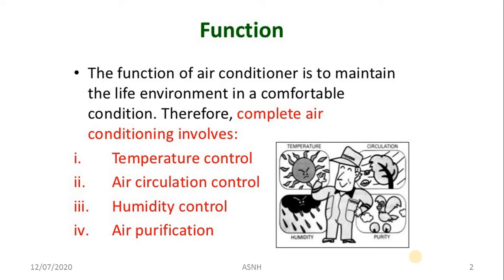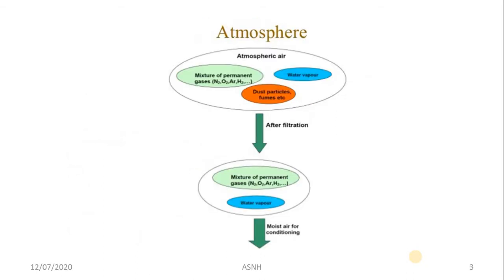Due to global warming, the temperature of the earth increases year by year, so people need comfort in every aspect — domestic, commercial, and industrial applications. Parameters like humidity and air purification are most important in refrigeration systems. The main function of the air conditioner is to maintain the purity of the air as well as humidity.